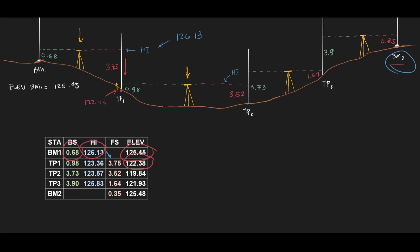Then you transfer your instrument and take a backsight on TP1. We have 0.98 here. If you add 122.38 and 0.98, you will get 123.36. Then to get the elevation of TP2, you subtract the foresight on TP2, which is 3.52, and you will get this elevation. So you basically do that repeatedly until you reach BM2.